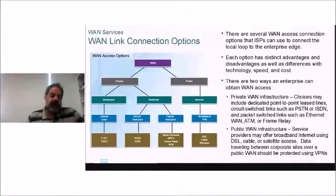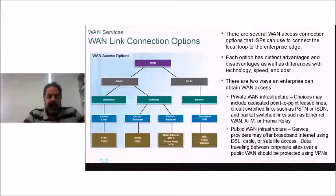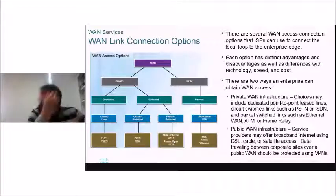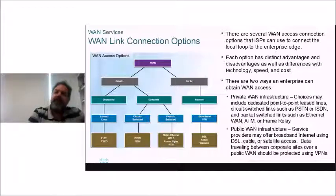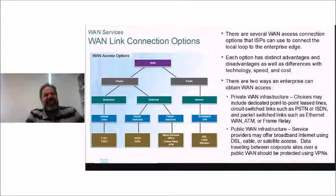For circuit-switched private options you have PSTN or ISDN. For packet switching there are metro Ethernet — which is essentially what the NBN is today especially with fiber to the home — MPLS, frame relay, and ATM (Asynchronous Transfer Mode). ATM is normally used inside telco networks; they don't call them frames or packets but cells. ATM uses ASICs (Application-Specific Integrated Circuits) built for that purpose, so they switch extremely quickly.